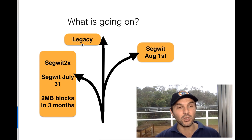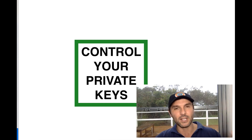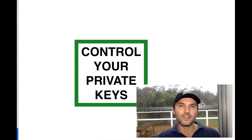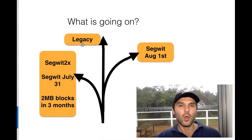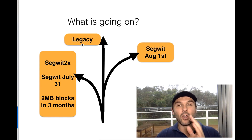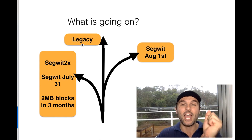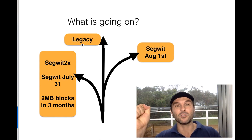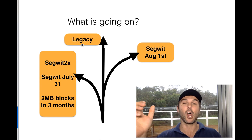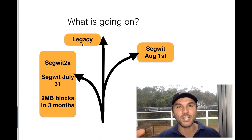So how do you protect yourself? The biggest and best thing you can do is control your private keys. I've got a video on how to do that — I'll leave the link in the description. What this actually means is that if you have, say, three Bitcoin right now and the chain splits into two, you'll have three Bitcoins on this chain and three Bitcoins on the other chain. And if it splits again, you get three Bitcoins on that chain as well — but only if you control your private keys.